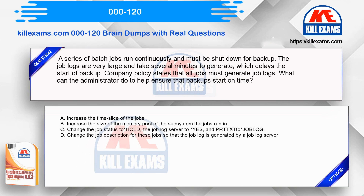Option A: Increase the time slice of the jobs. Option B: Increase the size of the memory pool of the subsystem the jobs run in. Option C: Change the job log status to hold, the job log server to yes, and write prior job log. Option D: Change the job description for these jobs so that the job log is generated by a job log server.